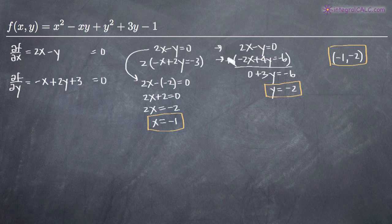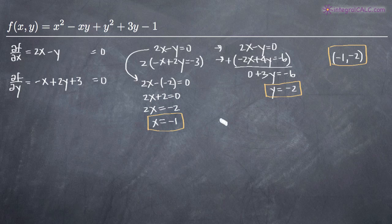That point represents probably either a local maximum, a local minimum, a saddle point, or if the second derivative test is inconclusive, I won't be able to tell. Sometimes when you solve the system of equations, you may end up with multiple points, in which case you'll need to evaluate each of them. In this case I only have one. What I need to do next is take the second order partial derivatives.